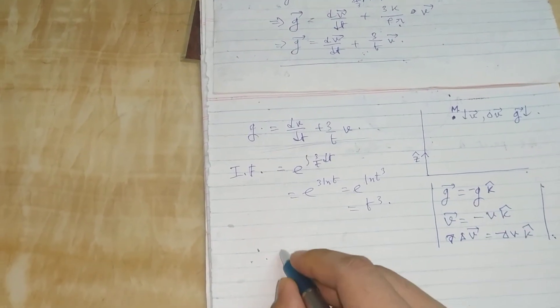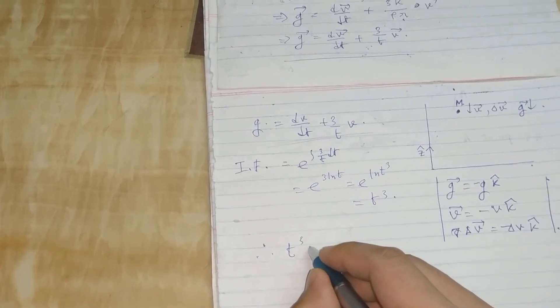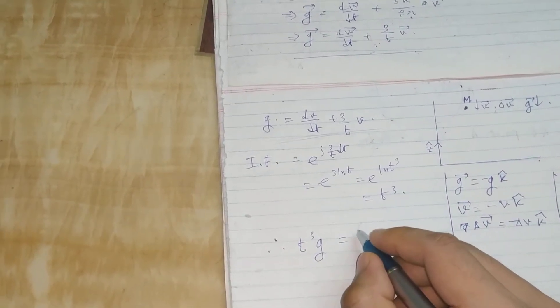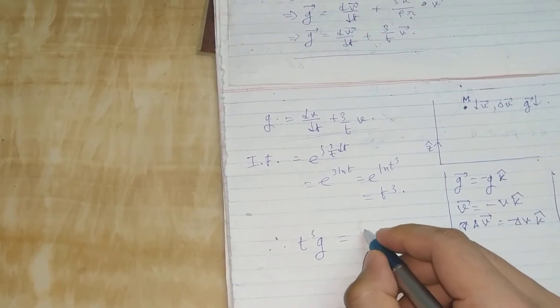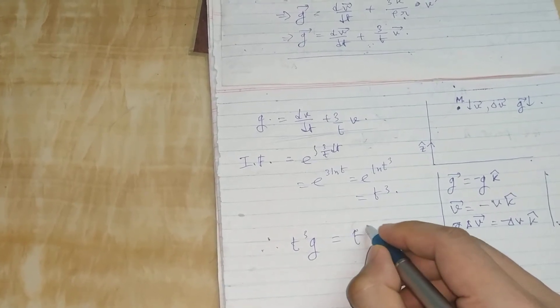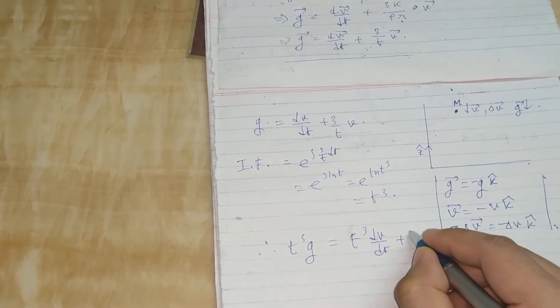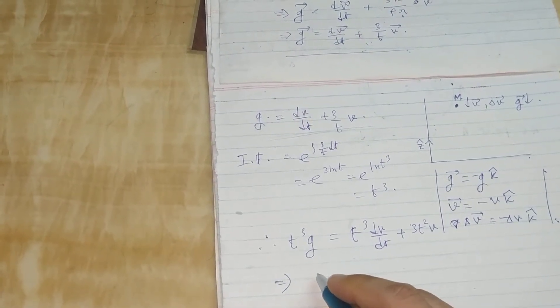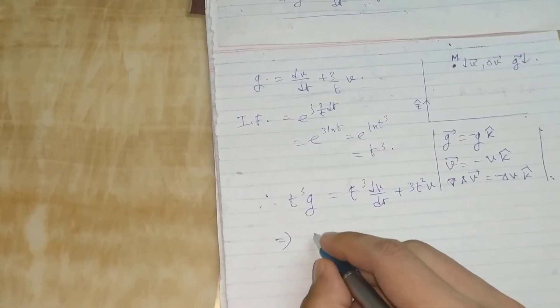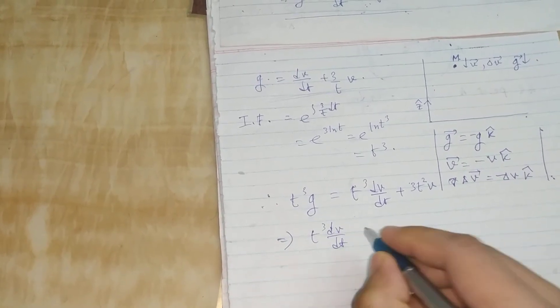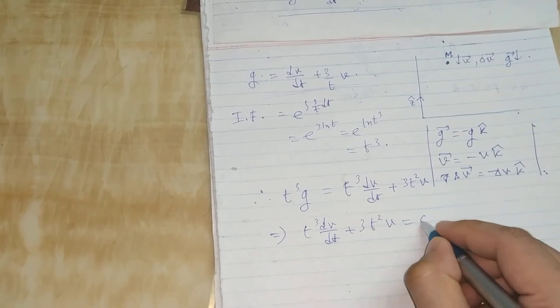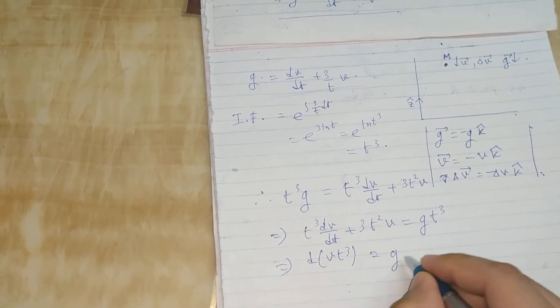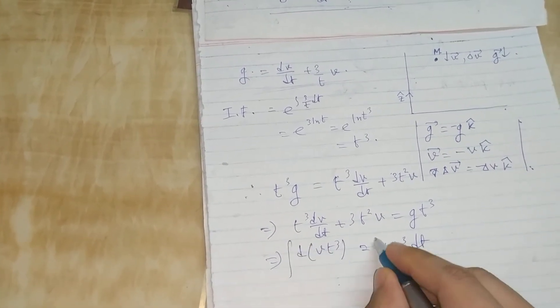The integrating factor will be e^(∫2/t dt) = t². So we can write the equation in the form d(vt²)/dt = gt². We will integrate this.